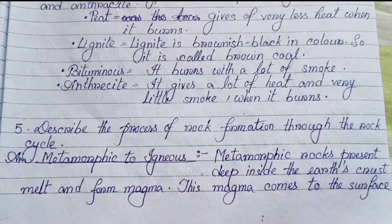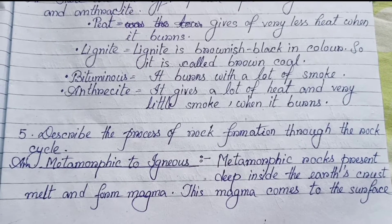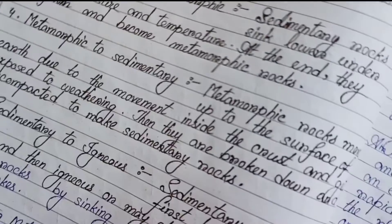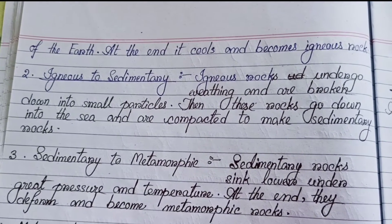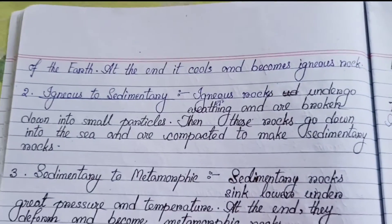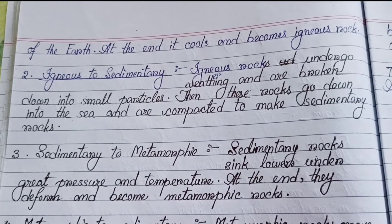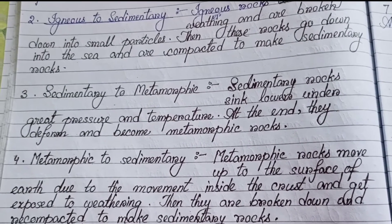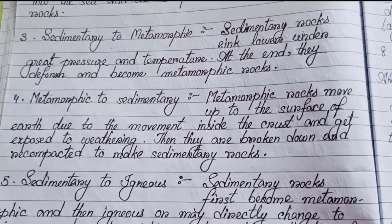Number five: Describe the process of rock formation through the rock cycle. (1) Metamorphic to Igneous: Metamorphic rocks deep inside the earth's crust melt and form magma, which comes to the surface, cools, and becomes igneous rock. (2) Igneous to Sedimentary: Igneous rocks undergo weathering and break into small particles, go down into the sea, and are compacted to make sedimentary rocks. (3) Sedimentary to Metamorphic: Sedimentary rocks sink lower under great pressure and temperature and become metamorphic rocks.